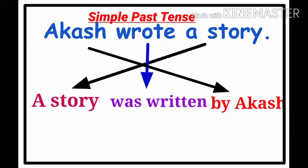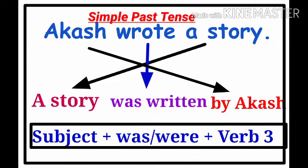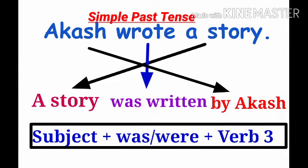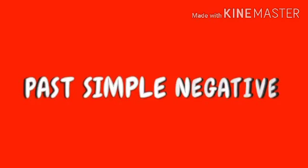So the formula in passive for simple past is: subject plus was/were plus V3. 'A story was written by Akash.' If it is plural, if it is 'stories,' you should write 'Stories were written by Akash.' Now let's change the same sentence into negative.